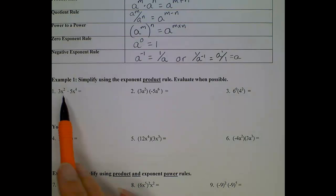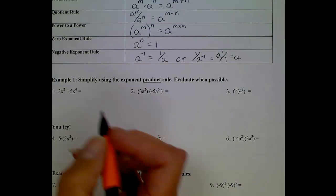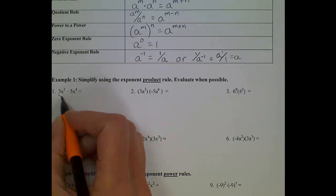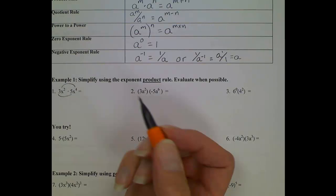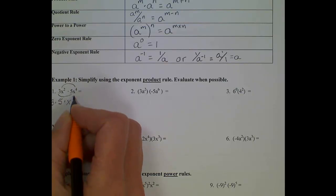For example, for numbers 1, 2, and 3, we're going to be using the product rule. So we have 3x squared times 5x to the 4th. I'm going to group terms that I can multiply together. 3 times 5, and then I'll put the x terms together. x squared times x to the 4th.